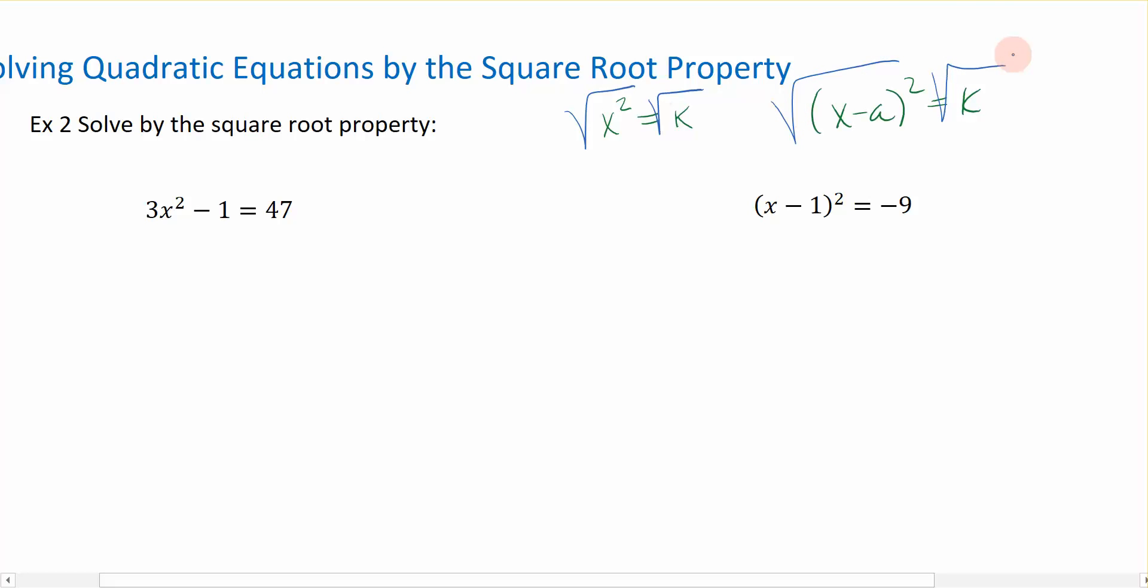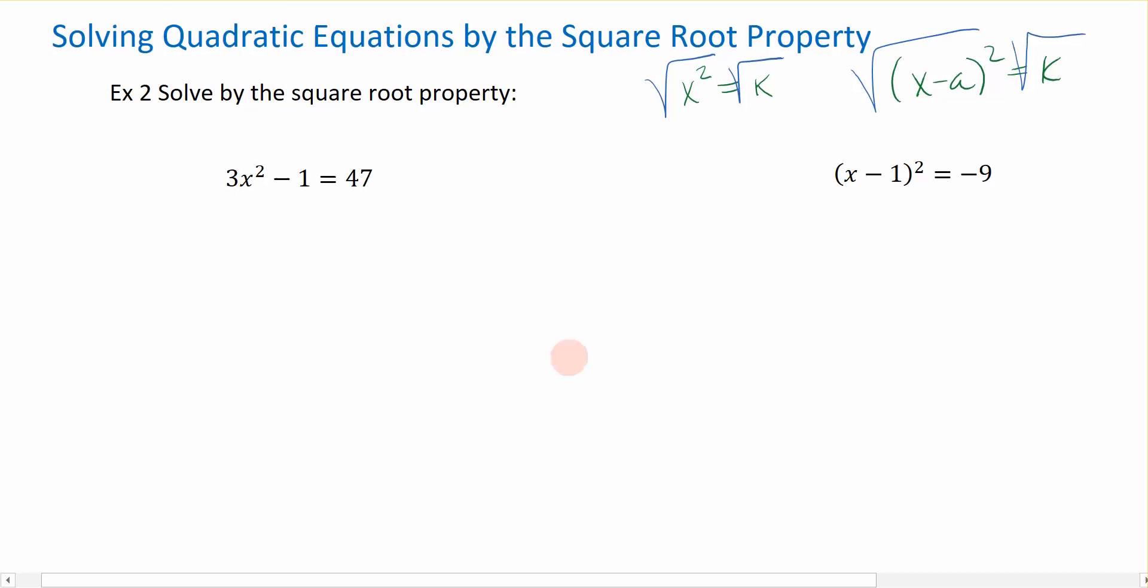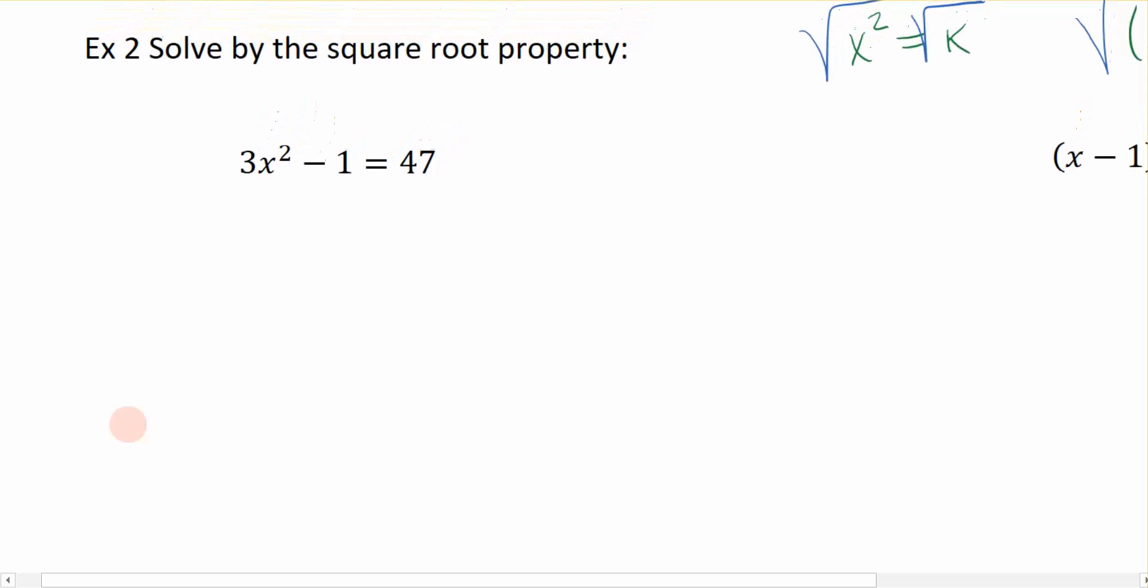That's what we're focusing on in this video. So the first example says 3x² - 1 = 47. Now, I don't have any parentheses in this quadratic, so I'm thinking I'm looking for a square root form that's going to end up looking like x² = k.